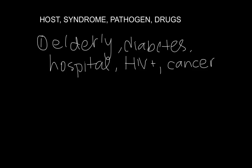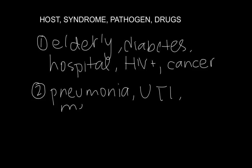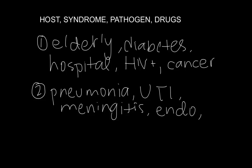The next step is figuring out what the patient's syndrome is. Is it a pneumonia, a urinary tract infection, a meningitis, or an endocarditis? Are any of them associated with a full-blown sepsis syndrome? These factors determine the relative acuity of the situation, which determines how aggressive you have to be with antibiotics to start with.